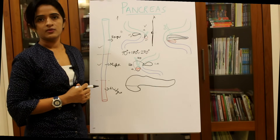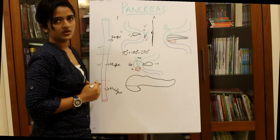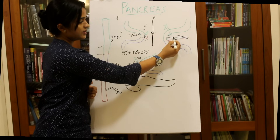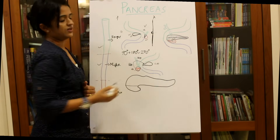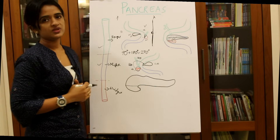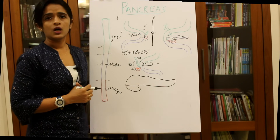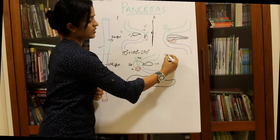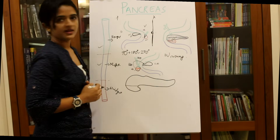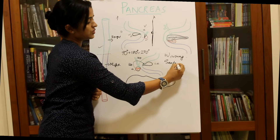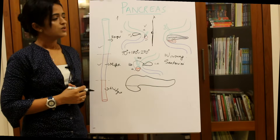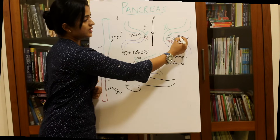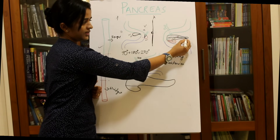Now let's see the duct formation. Each bud has its own duct — the dorsal pancreatic bud has its own duct and the ventral pancreatic bud has its own duct. An oblique communication is made between the dorsal and ventral pancreatic ducts. The major pancreatic duct is the duct of Wirsung, and the minor pancreatic duct is the duct of Santorini. The major pancreatic duct is formed from three sources.